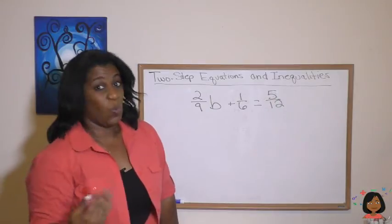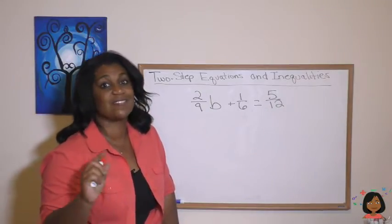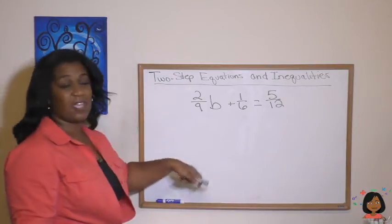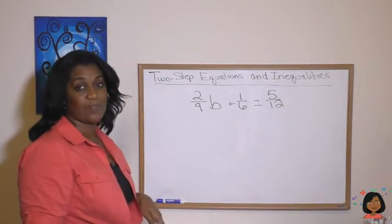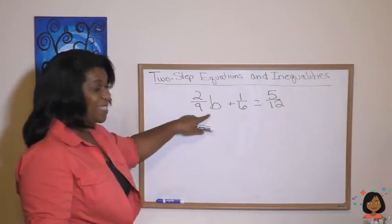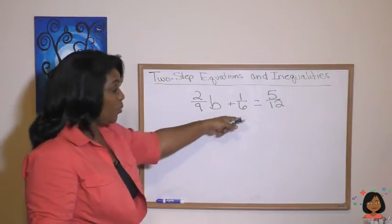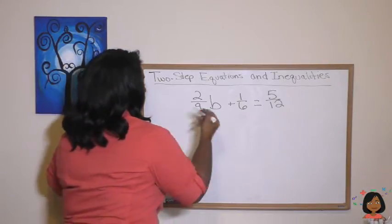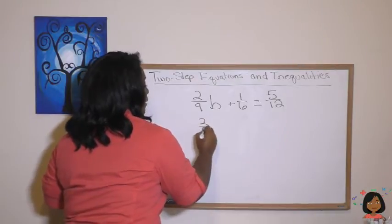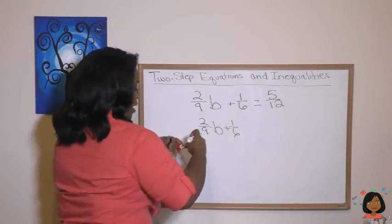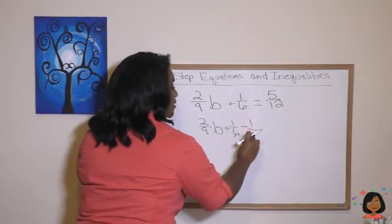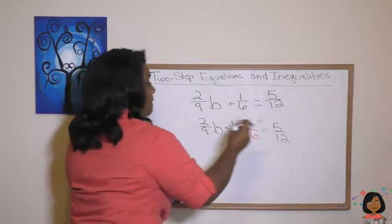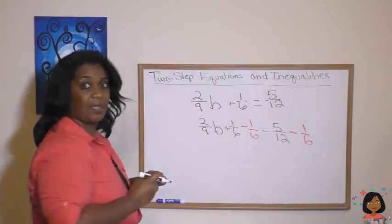Good job. What about doing it with fractions? Well, the process is still the same. There may be a little bit more work involved. Take a look. 2 ninths b plus 1 sixth equals 5 twelfths. So first thing we have to do is get rid of the one that's not attached to our variable, which is our 1 sixth. So we're going to subtract 1 sixth from both sides of the equation. I'm going to write it all out so you can see what's happening.